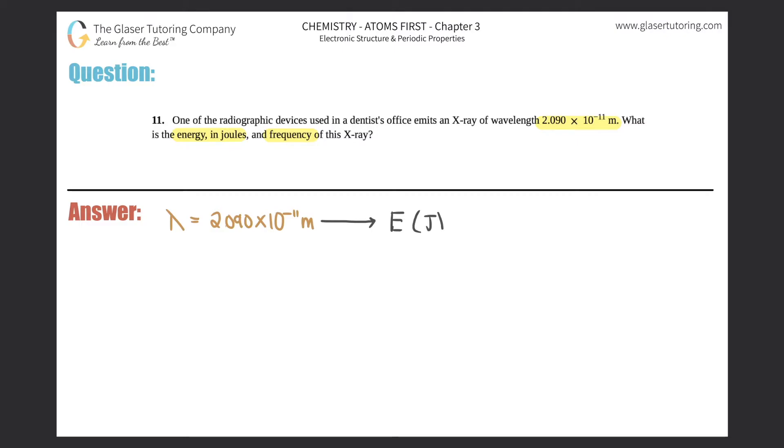We know a formula that goes from wavelength to energy. We've used it many times before in this chapter already. It is energy equals hc over lambda. Remember, h is Planck's constant: h is 6.626 times 10 to the negative 34th joules per second. And c is a constant, the speed of light, which is 2.998 times 10 to the eighth meters per second. Now that we have that, we can plug everything in and solve.